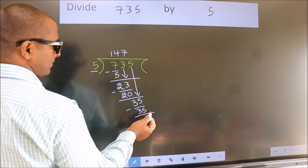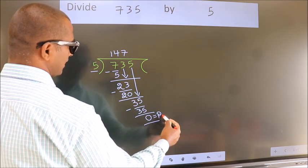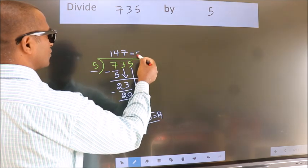No more numbers to bring down. So we stop here. This is our remainder. This is our quotient.